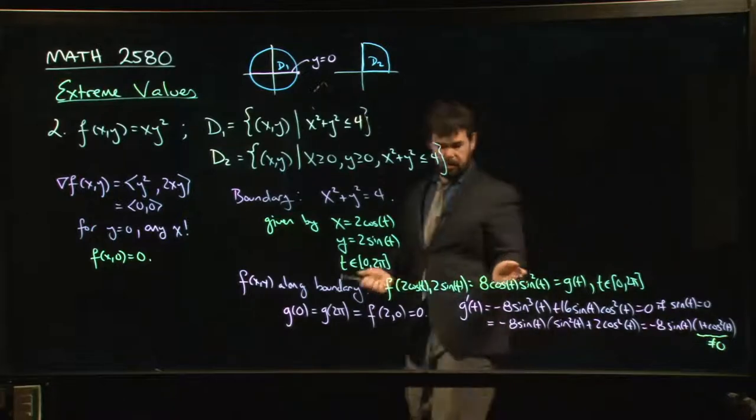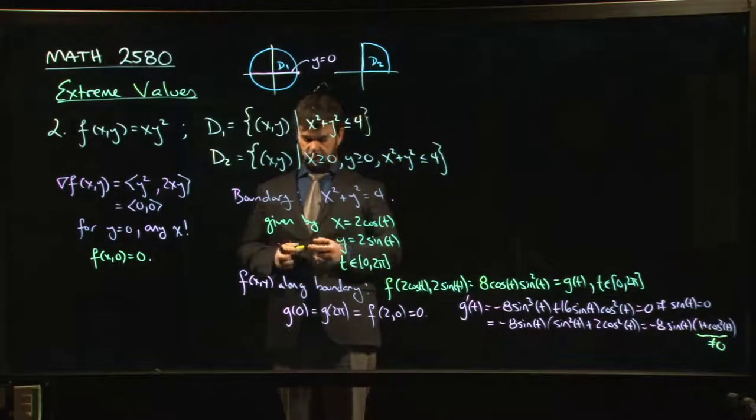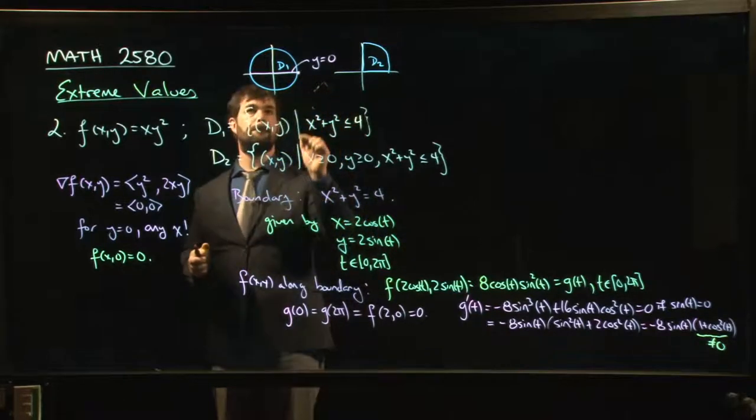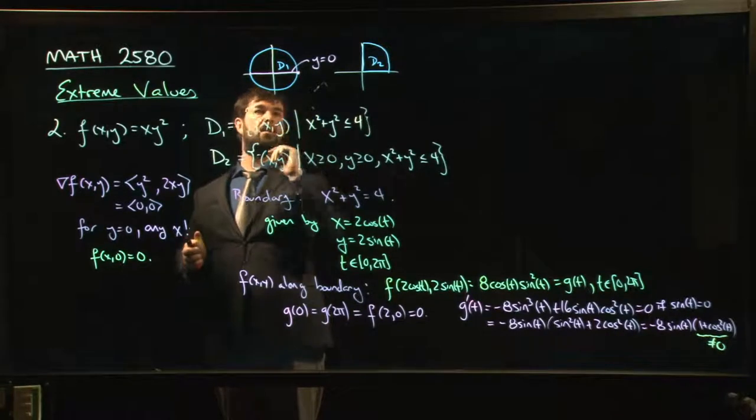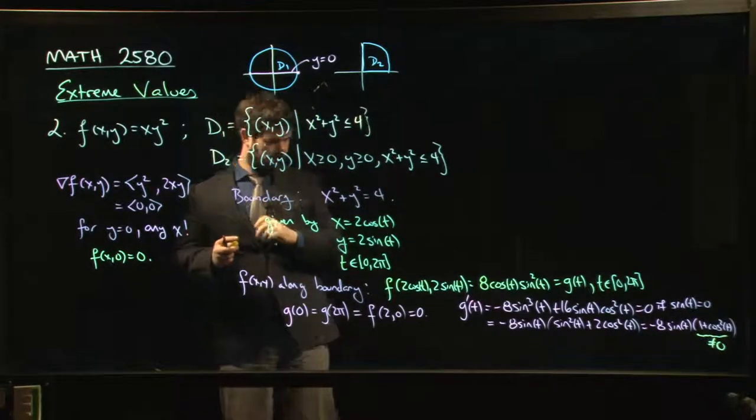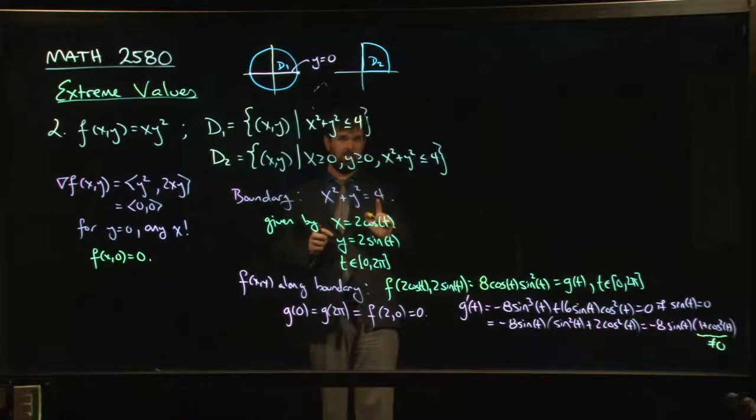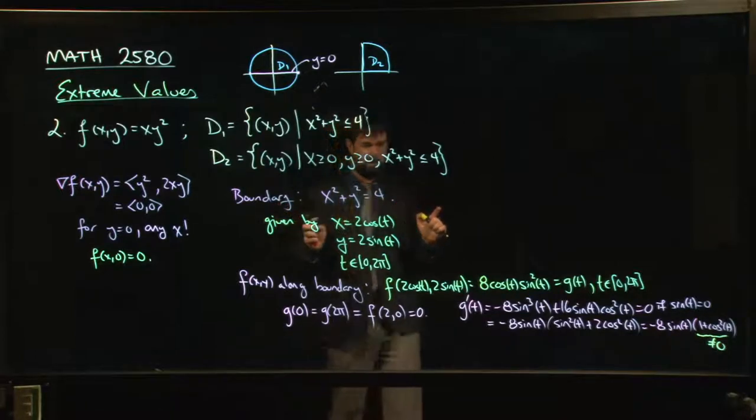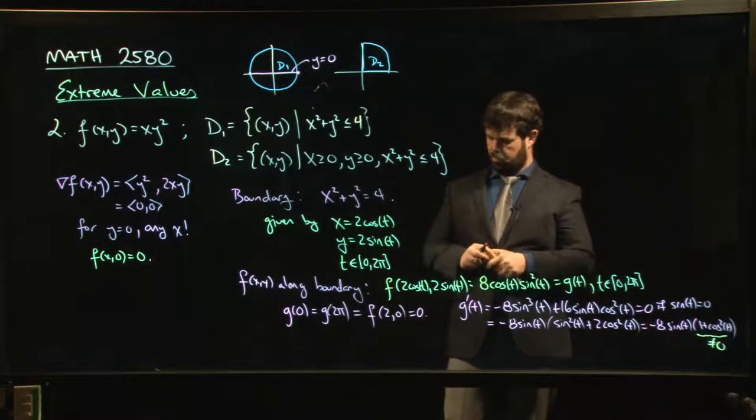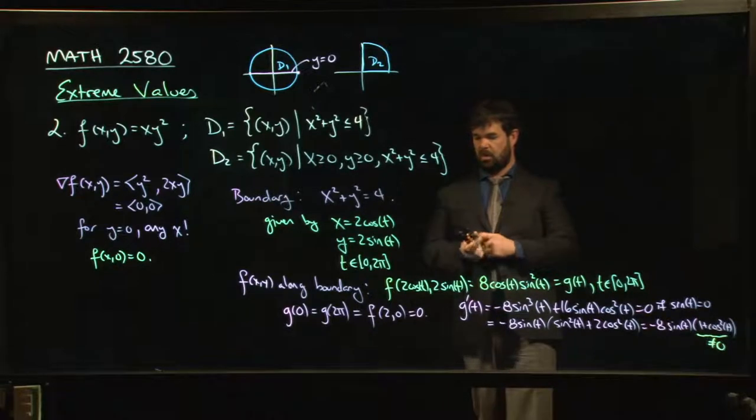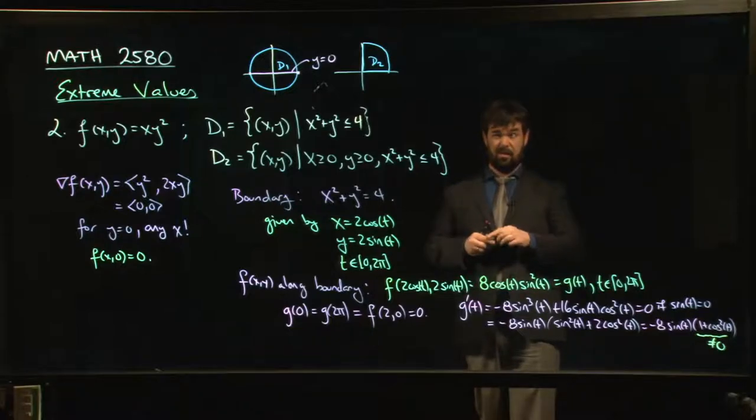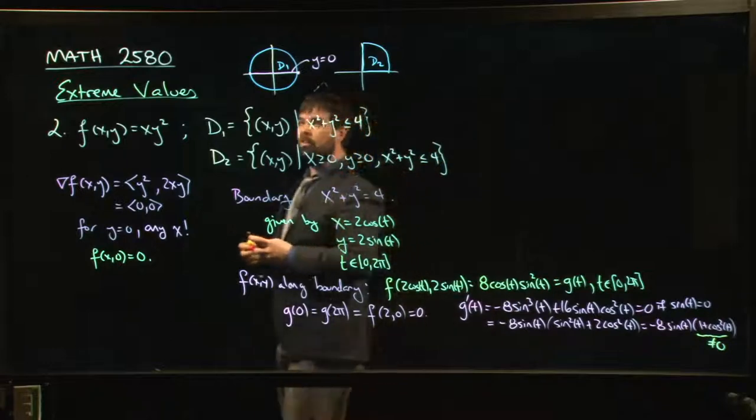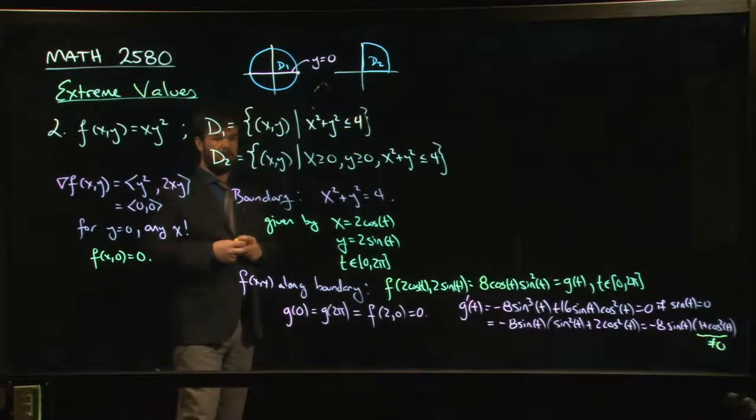Now, where is sin t going to be equal to 0? Sine of t equals 0 here. This is making me suspicious that something is wrong. Because you know what happens at those points. The function is 0. And this is not a constant function. It's not identically 0. So I've missed something. What have I missed? Can we spot it? Did I mess up my derivative? I must have, right? Because the extreme value theorem guarantees me a max and a min. Right now, the only value I've managed to dig out of this thing is 0. So I've done something wrong.